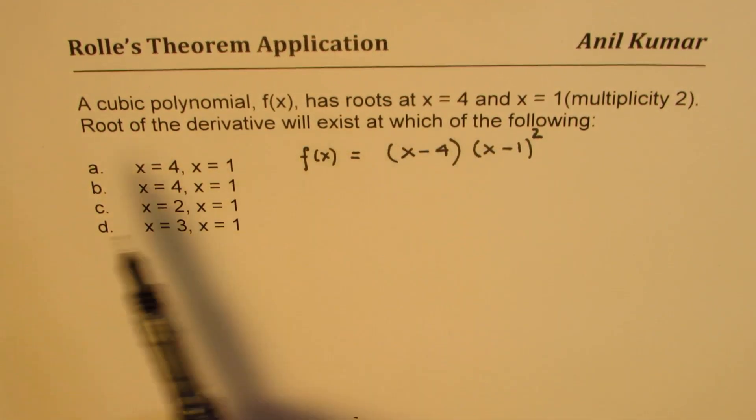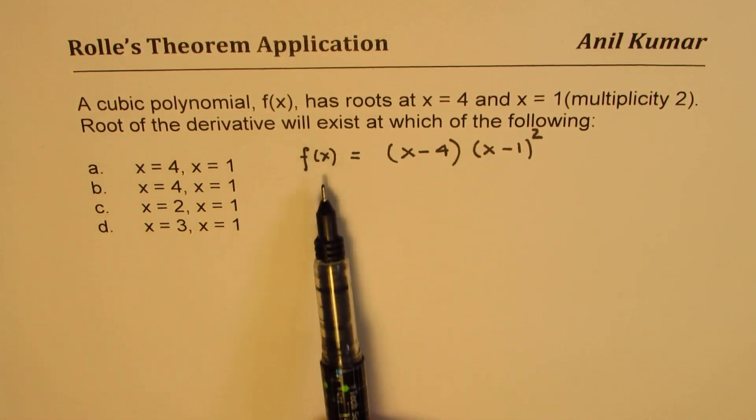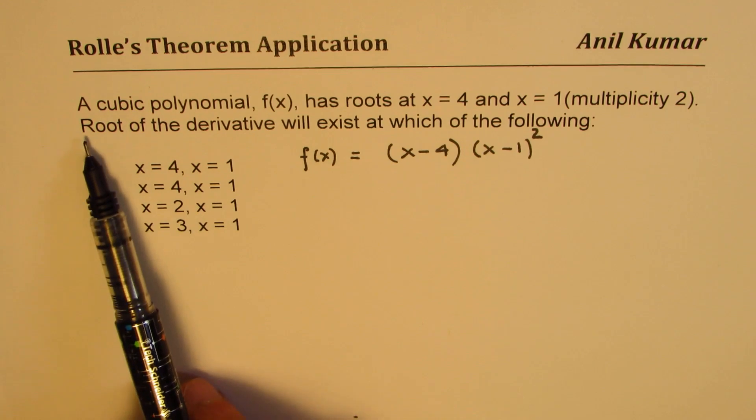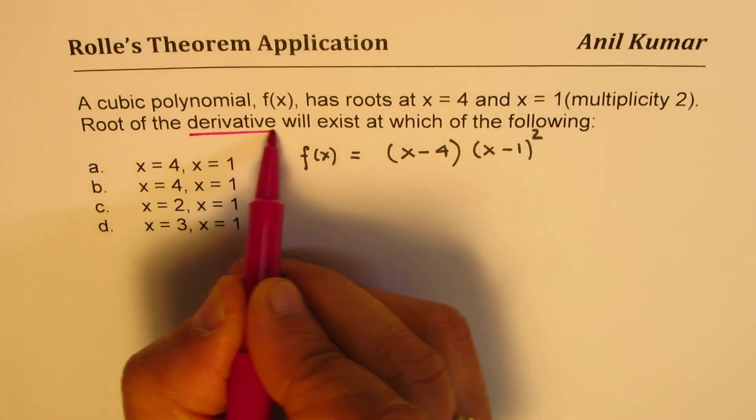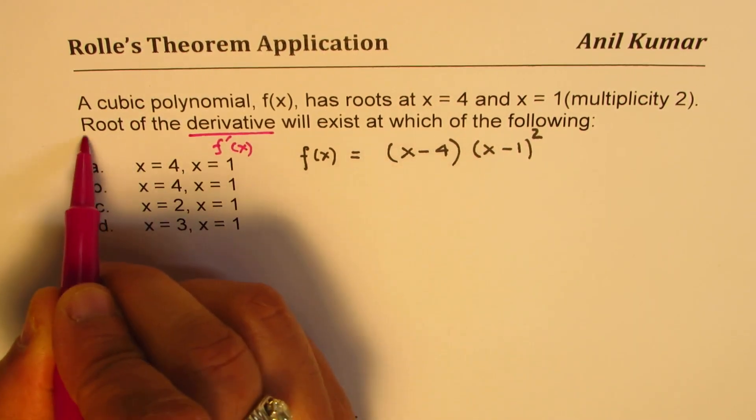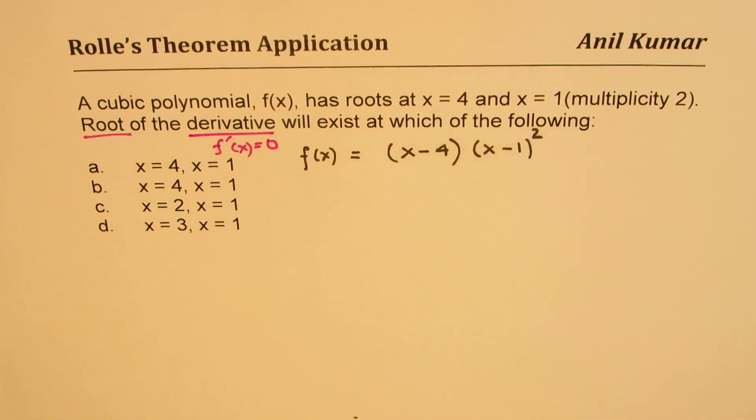The second one here is root of derivative, so we need to find the derivative and root means equated to 0. So basically we need to find the derivative which is f'(x) and root means that is equal to 0 will exist at which of the following.